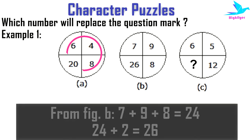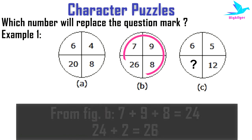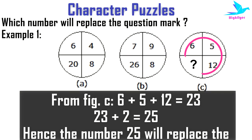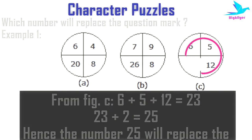Similarly, in figure B we can see 7 + 9 + 8 = 24, and 24 + 2 = 26. So in figure C we can find 6 + 5 + 12 = 23, and the required number is 23 + 2 = 25.